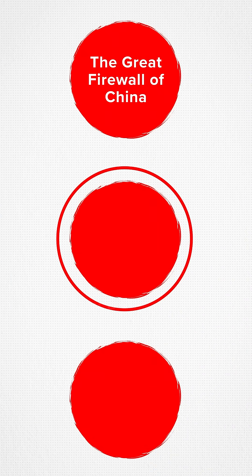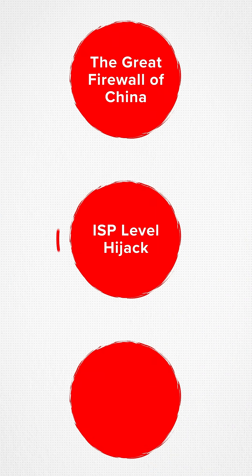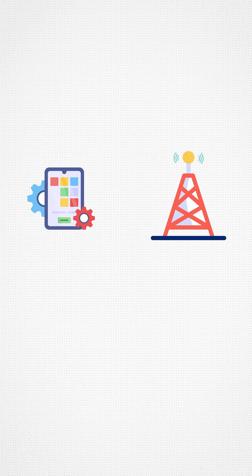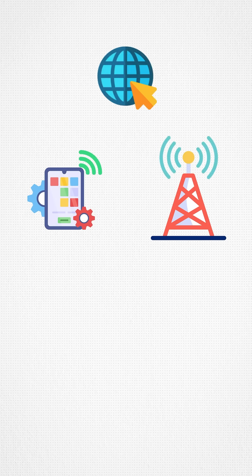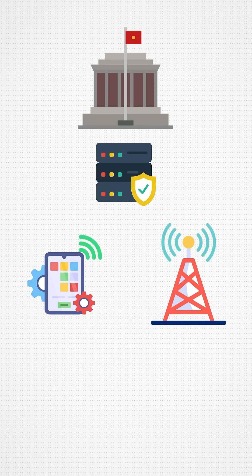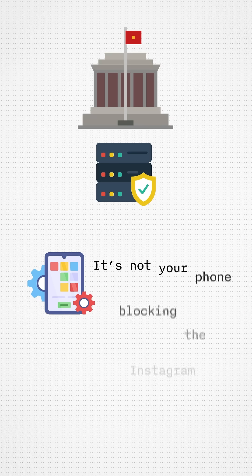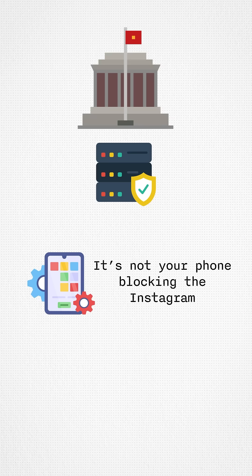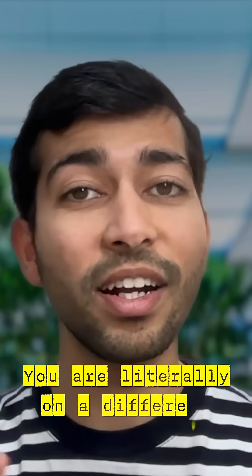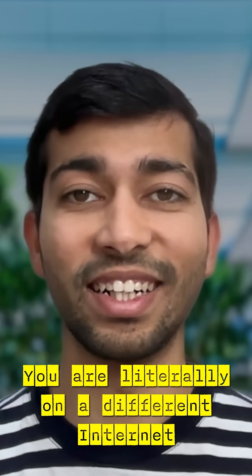The second way: ISP-level hijack. This is a crazy one. The moment your phone connects to a Chinese tower, your internet is forced through government servers. It's not your phone blocking Instagram, not your SIM — it's the country blocking the route. You're literally on a different internet.